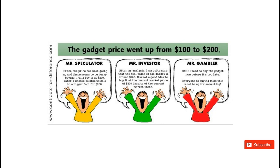It says the gadget price went up from $100 to $200. Mr. Speculator says: 'The price has been going up and there seems to be heavy buying. I will buy it at $200 — I should be able to sell to a bigger fool for $250.' I don't agree with calling anybody a fool, but you get what it's saying. Mr. Investor says: 'After my analysis, I am quite sure the real value of the gadget is around $100. It's not a good idea to buy at the current market price of $200 despite the current market trend.' Then there's Mr. Gambler — I like bringing the gambler into this: 'OMG, I need to buy that gadget now before it's too late. Everyone is buying it, so this must be up for something.' What does that sound like? FOMO — fear of missing out.